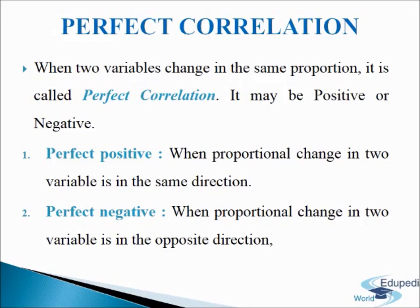Next, we come to perfect negative correlation. When proportional change in two variables is in the opposite direction, it is called perfect negative correlation. The coefficient of correlation in this case is negative 1, or minus 1. When data are plotted on a graph paper, all the points would lie on a straight line making a negative slope.